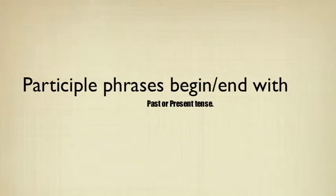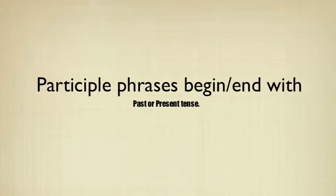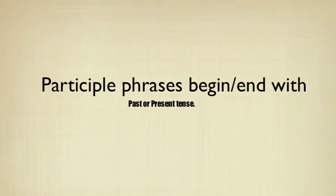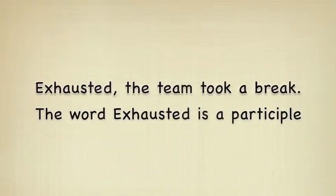A quick reminder: participle phrases begin and end with past or present tense. Example: 'Exhausted, the teen took a break.' The word exhausted is a participle — in fact, it is a past participle. Therefore, it follows Rule Number 2 by putting a comma after the word exhausted.